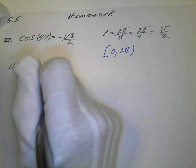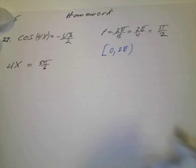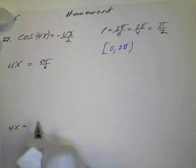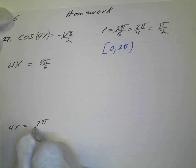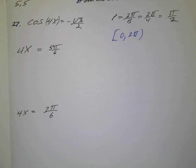So that's going to be... In quadrant 2, it would be 5π over 6. And then we also have in the other quadrant, 4x would equal 7π over 6 in quadrant 3. So those are my two basic solutions, all right?